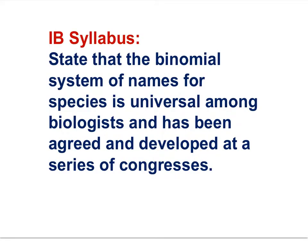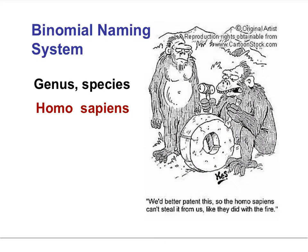Here is our first IB syllabus statement: state that the binomial system of names for species is universal among biologists and has been agreed and developed at a series of congresses. Biologists have agreed worldwide to use the binomial naming system to give each species a name. The two-name designation given to each species are the last two names of the classic 7-taxa hierarchy.